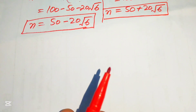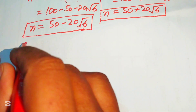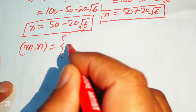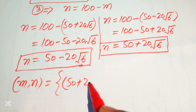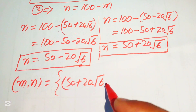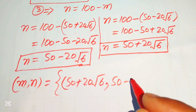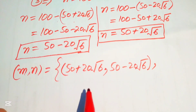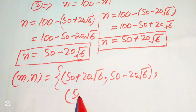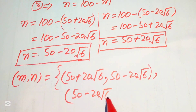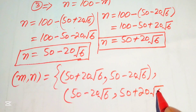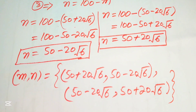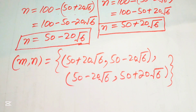Finally, the two solutions of the given equation are: first solution, m equals 50 plus 20 root 6 and n equals 50 minus 20 root 6; second solution, m equals 50 minus 20 root 6 and n equals 50 plus 20 root 6. This is the final answer. Thank you so much for watching this video, please subscribe to my channel for more exciting videos.